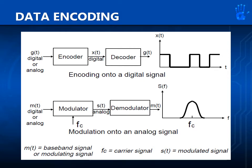In the upper part, we have the encoding onto a digital signal. First, let's start with the original message signal, G of T, also known as the baseband or modulating signal. It passes through an encoder, which basically samples the original waveform at various points. The encoder will then transform it into a digital signal, X of T.